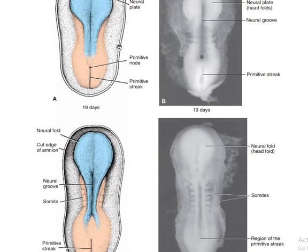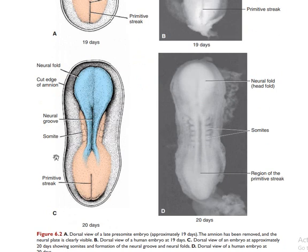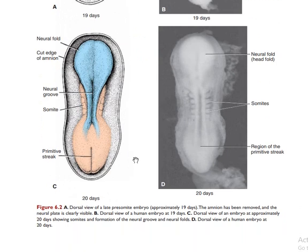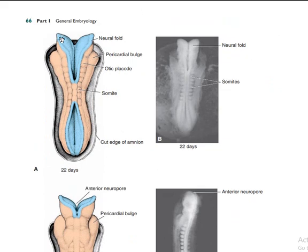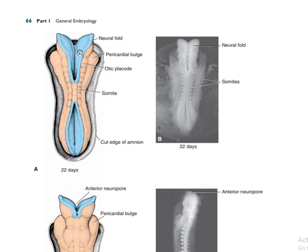You have the neural groove, somites, and primitive streak. The neural folds are forming and trying to enclose each other. As they close, the somites and mesoderm take position upward. In cross-section, the neural folds come together to form the neural tube, and at the apex of the neural folds the neural crest cells form — these are involved in formation of peripheral nervous tissues.